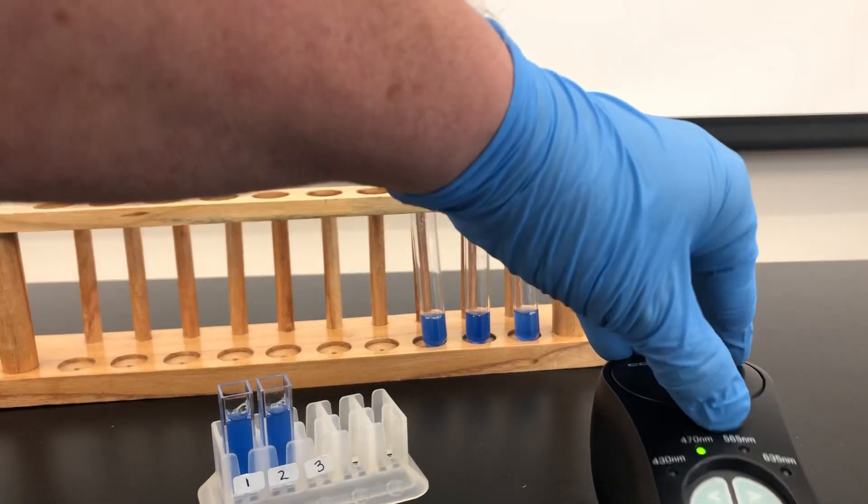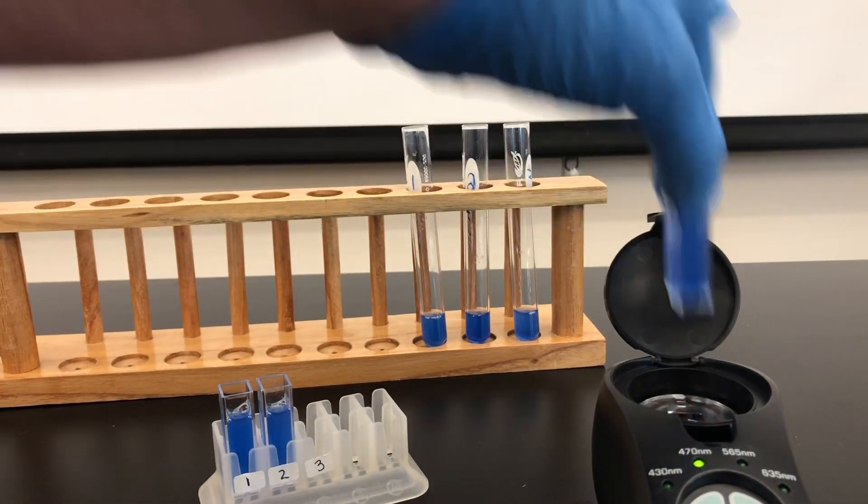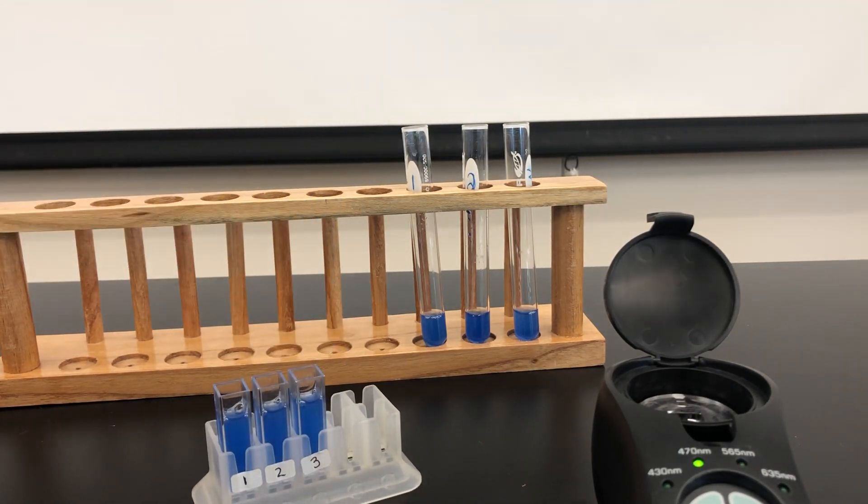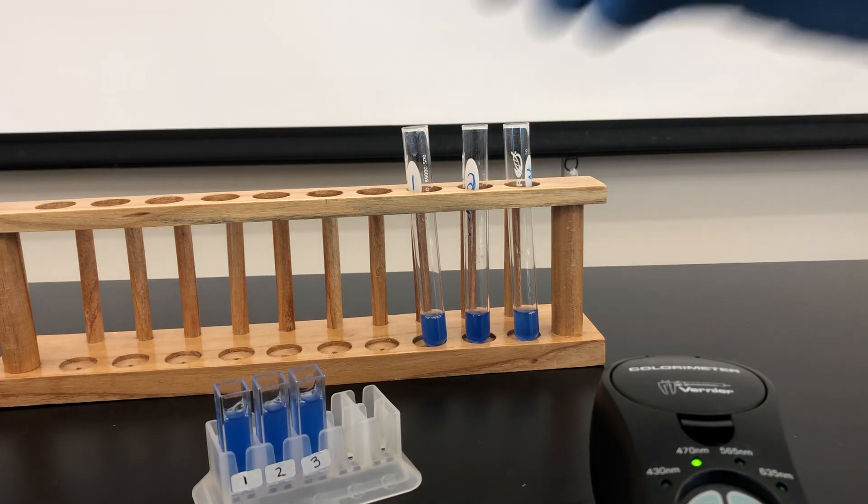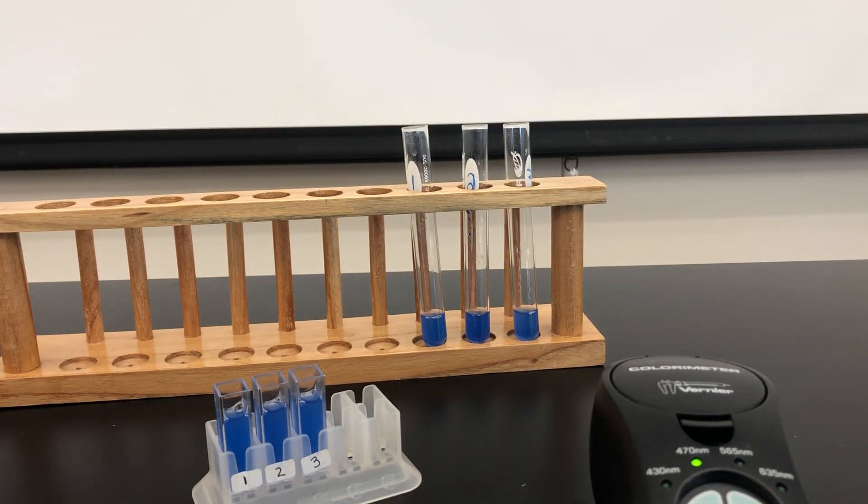Now remember what these values are trying to tell you. If this is the percent absorbance, that's the amount of light penetrating but not leaving. So the more it absorbs, the darker the color. The less it absorbs, the more light is getting through, so it's a lighter color.